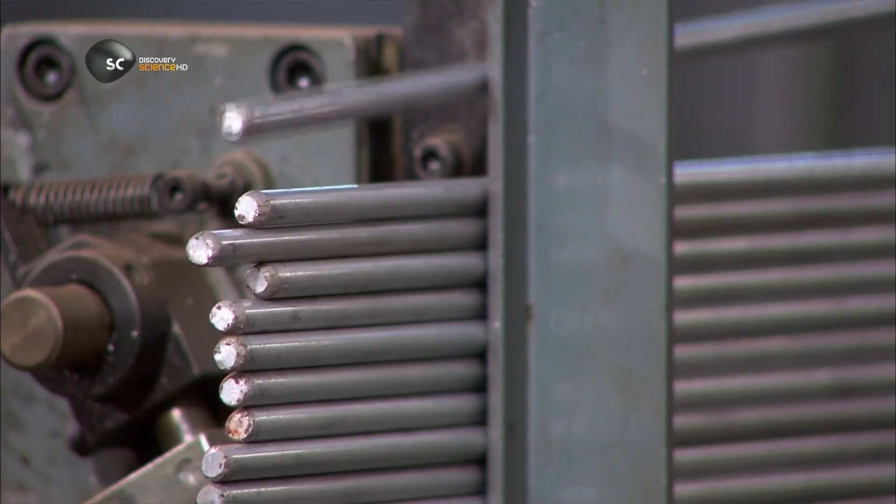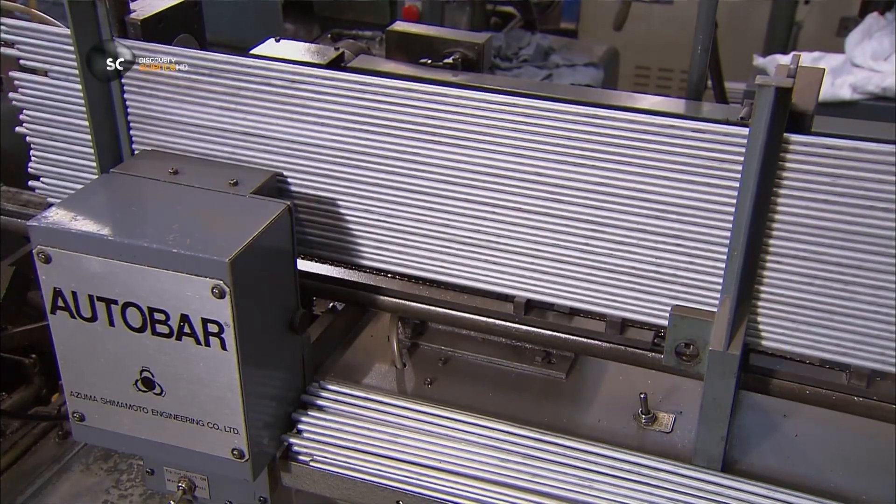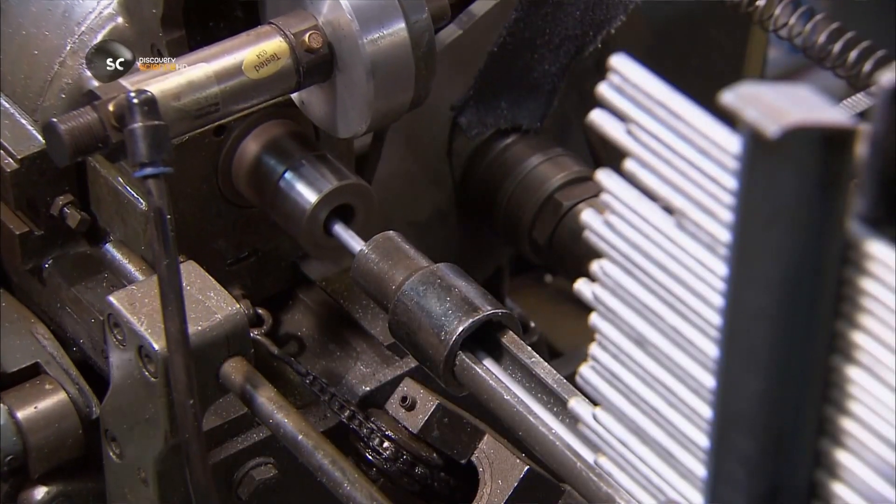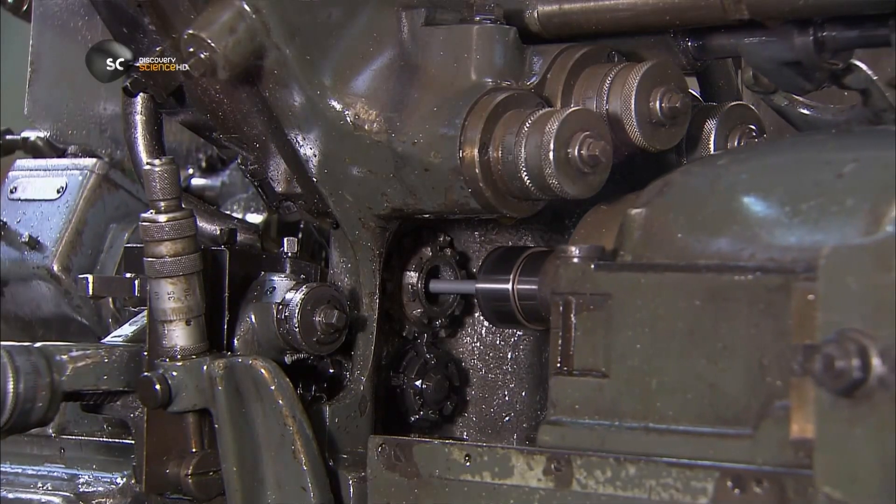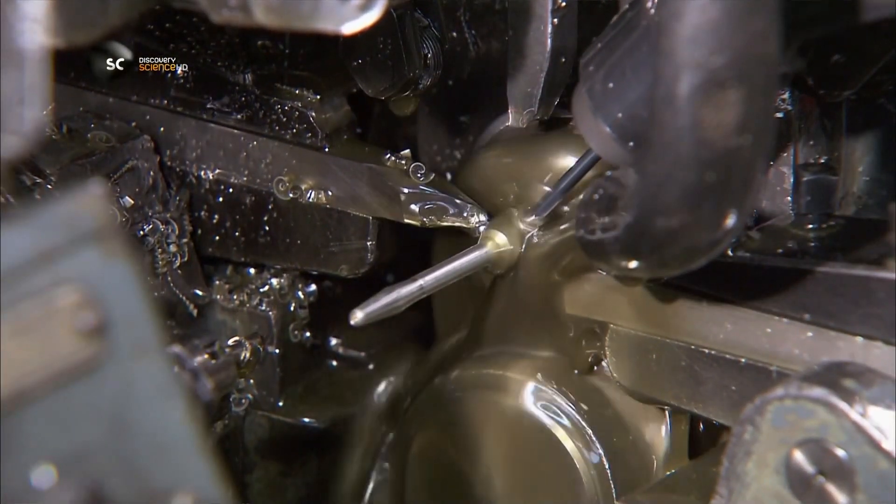They start by making the flight shafts. That's the piece that the darts' wings are attached to. They load 3mm aluminum rods into a machine that has several cutting tools. The tools work from many angles on one aluminum rod at a time. They shape the rod into dozens of shafts.